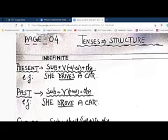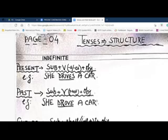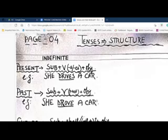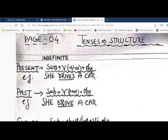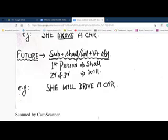To make it past tense, it becomes 'She drove a car,' meaning there was a time when she drove it. Then comes future tense — before the verb you add the auxiliary 'shall' or 'will,' determined by the person of the subject. First person uses 'shall,' second and third person use 'will.' Examples: 'She will drive a car,' 'I shall eat biryani.'